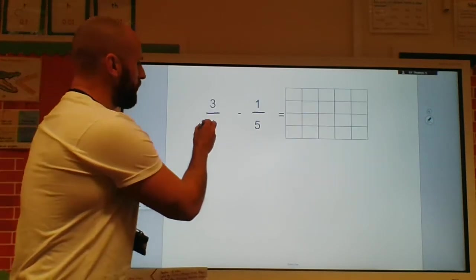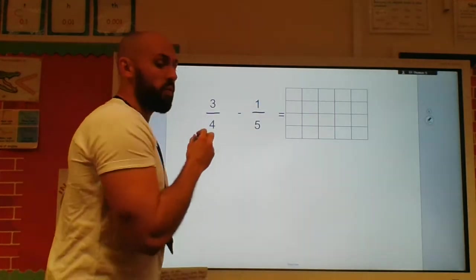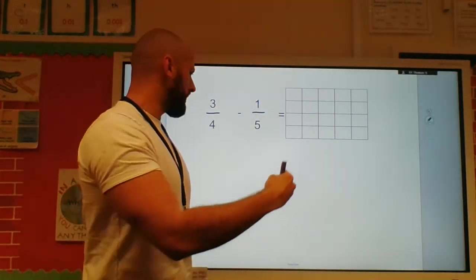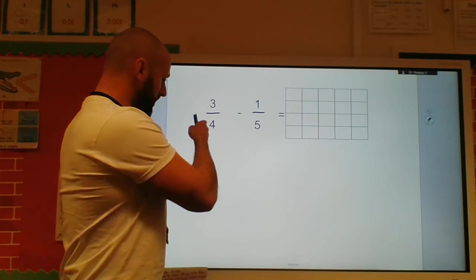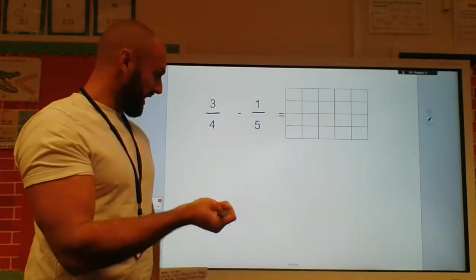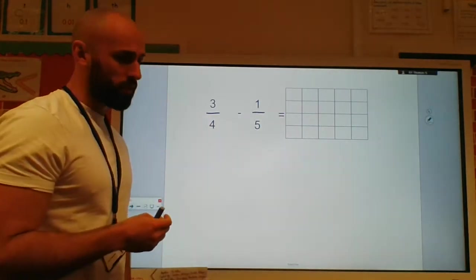So here now I've got three-quarters take away one-fifth. Well just as we've been looking at over the last couple of weeks, the denominators have to be the same. So again, I think of common multiples.